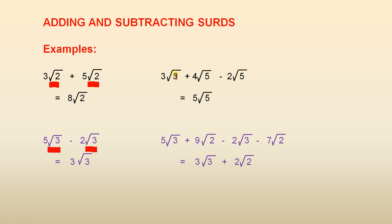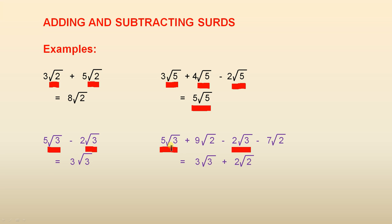The next one: 3 times the square root of 5 plus 4 times the square root of 5 minus 2 times the square root of 5. The like terms are all the square root of 5 terms. 3 plus 4 is 7, and 7 take away 2 is 5, so the answer is 5 times the square root of 5. In another example, the like terms give: 5 times the square root of 3 minus 2 times the square root of 3 equals 3 times the square root of 3, and 9 times the square root of 2 minus 7 times the square root of 2 equals 2 times the square root of 2.